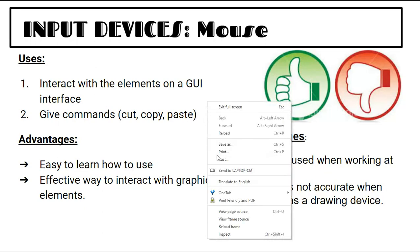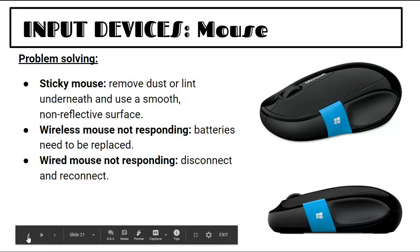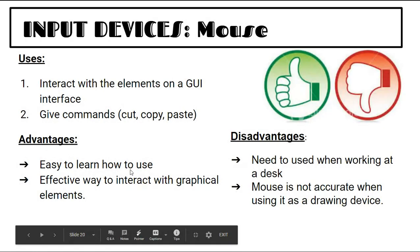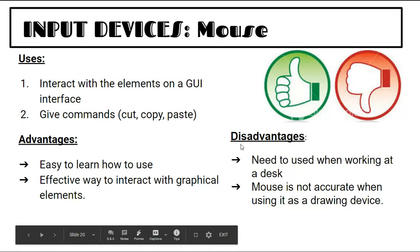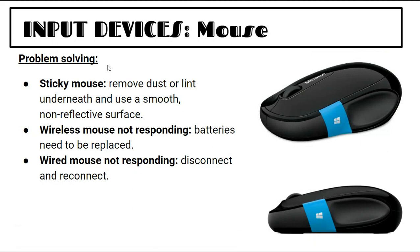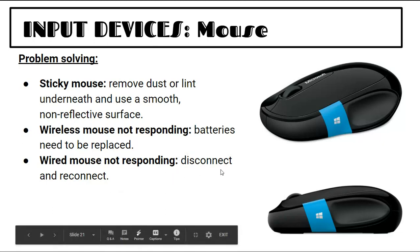When you right click with a mouse, options come up for commands like cut, copy, and paste. Advantages: easy to learn, effective for interacting with graphical elements. Disadvantages: needs to be used at a desk, and it's not accurate as a drawing device — a stylus is better. If your mouse is sticky, remove dust or lint underneath. Use a smooth, non-reflective surface — glass or mirror would not be suitable.